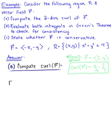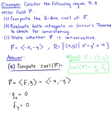In this example, we are given the vector field F with components little f and little g, where little f is defined as minus x and little g is defined as minus y. We can see that the partial derivative of g with respect to x is 0, and the partial derivative of f with respect to y is 0, so the curl of this vector field is 0.